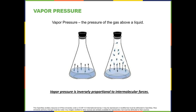Now let's think about this in terms of intermolecular forces. If the molecules have strong intermolecular forces, they're less likely to fly into the gas phase, meaning fewer molecules in the gas phase and therefore lower pressure. So vapor pressure is inversely proportional to intermolecular forces — the only one of the properties we're discussing that works this way. All the rest are directly proportional.